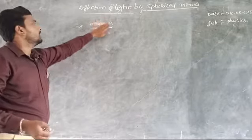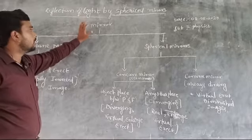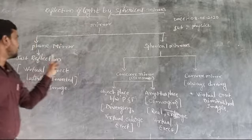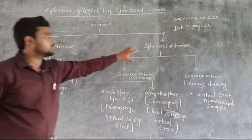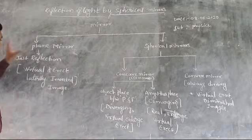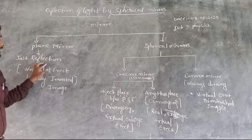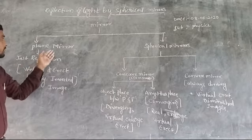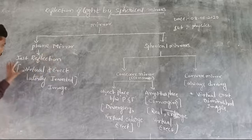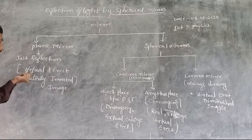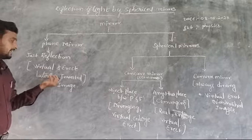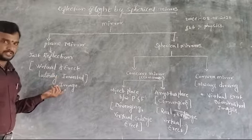There are two types of mirrors: the plane mirror and the spherical mirror. The plane mirror simply produces reflection, following the law of reflection. In a plane mirror, the image formed is virtual and erect, and it is a laterally inverted image.